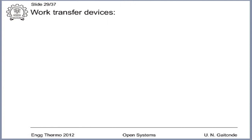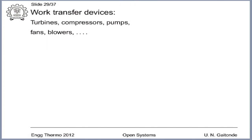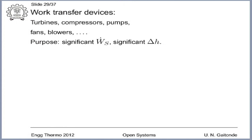We now come to work transfer devices, which are of more interest because of the work transfer interaction and the second law coming into play very significantly. Work transfer devices are turbines, compressors, pumps, fans, and blowers — very common devices whose purpose is to have significant power transfer. Turbines are producers of power, including wind turbines and hydro turbines; compressors, pumps, fans, and blowers are consumers of power. For all of these, the delta H of the stream is significant.